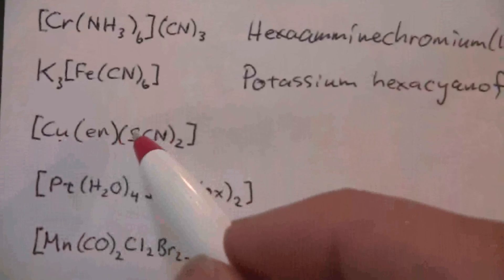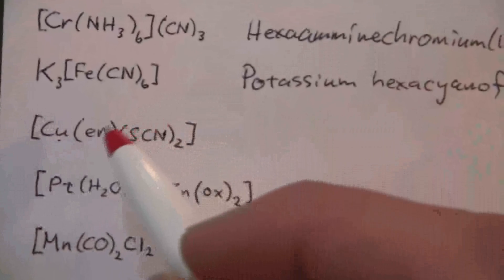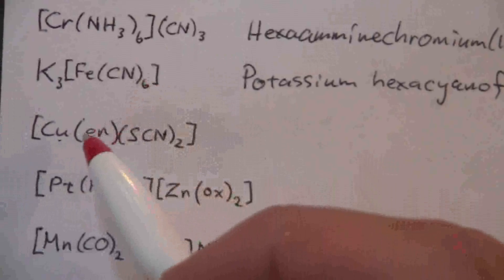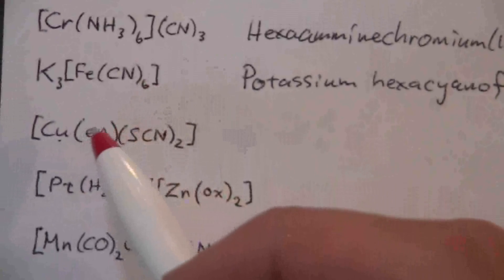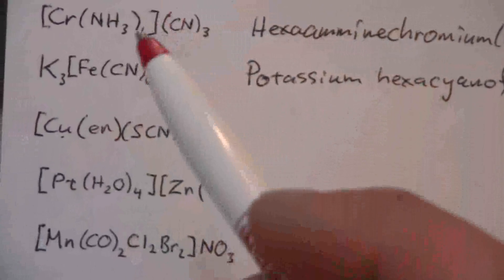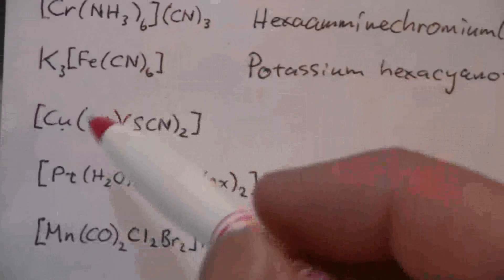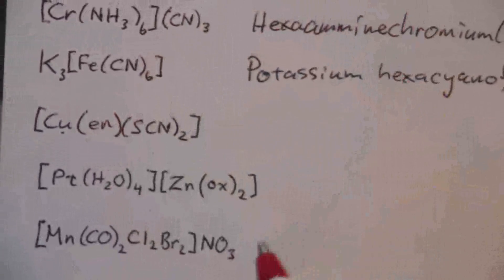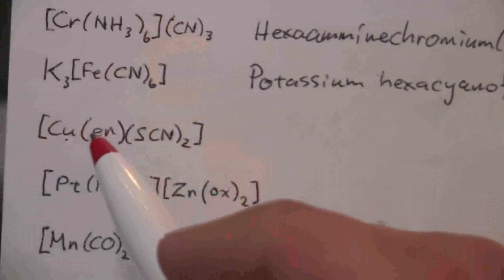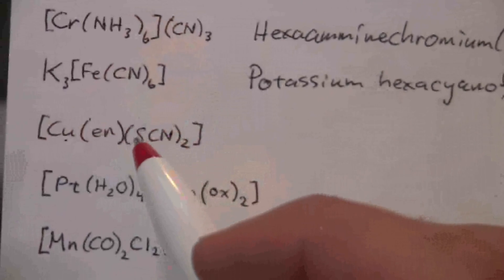Okay, so we name the ligands first. Now we have multiple ligands this time, so we name them in alphabetical order. EN is short for ethylenediamine. By the way, if I were to give you one like this on the test, I would specify what the abbreviations mean. So this is ethylenediamine and this is thiocyanate.